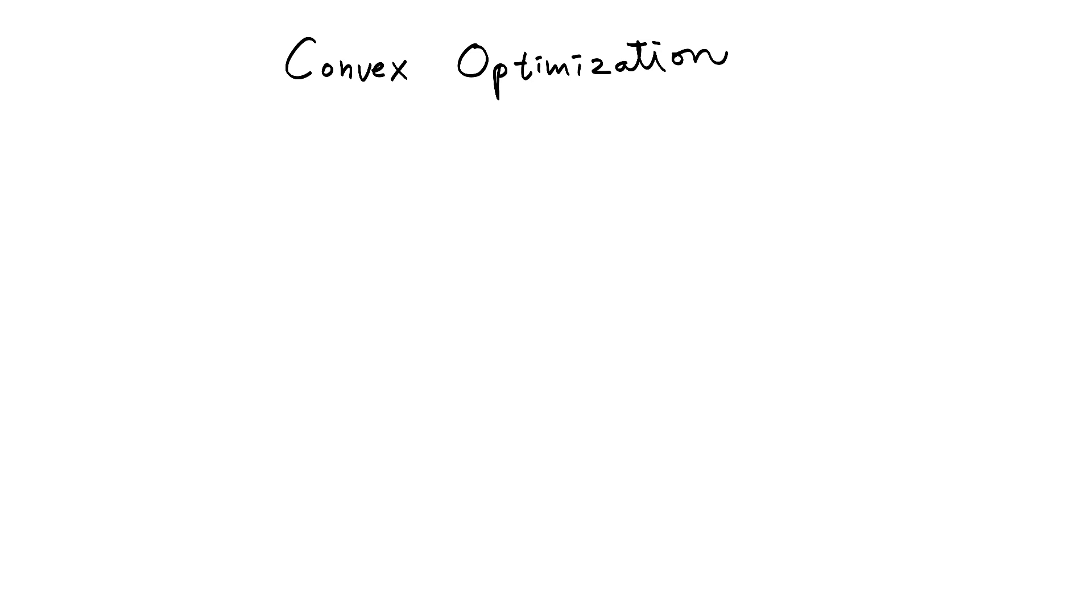Now I want to talk about convex optimization. Let us assume that we have a function shown here and using the gradient descent method we want to find x which makes this function minimal.